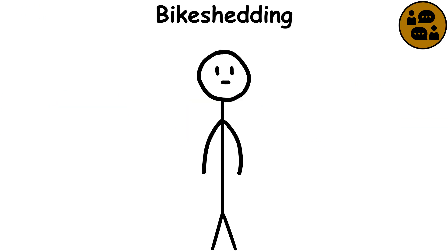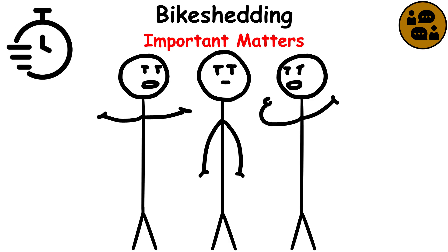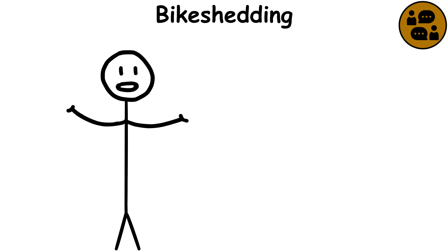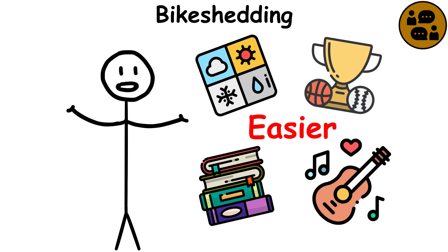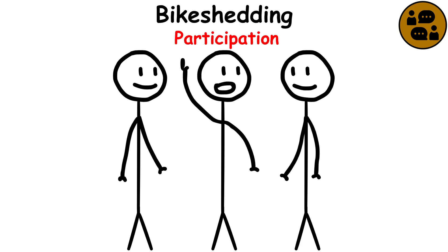Bike shedding. This describes our tendency to spend too much time discussing trivial matters and too little time discussing important matters. This occurs because it is much easier to discuss simple issues we are confident that we comprehend. In group settings, we often look to voice our opinions as a sign of participation.